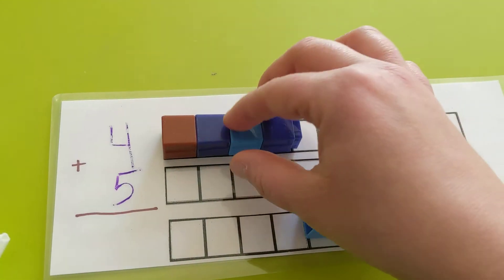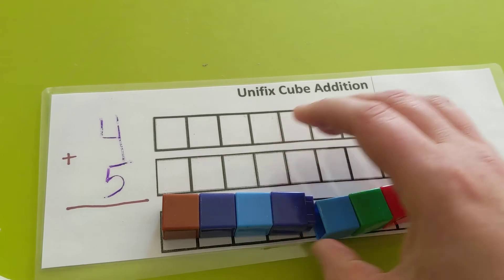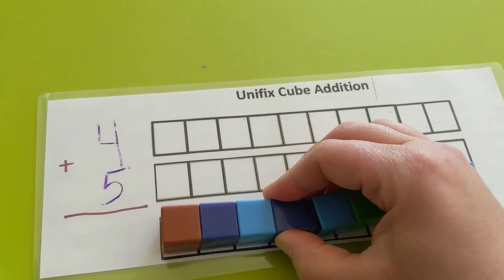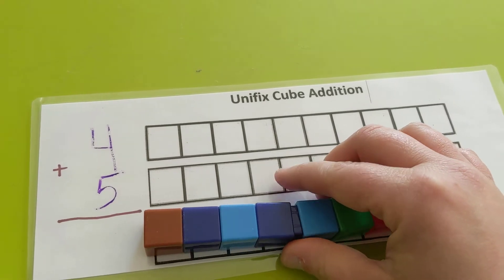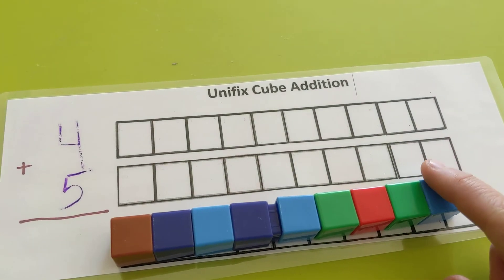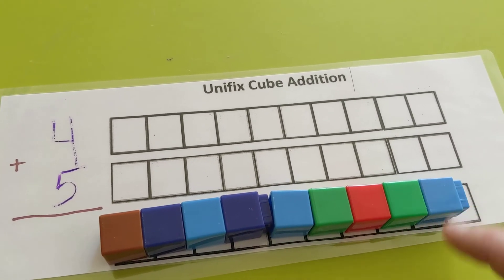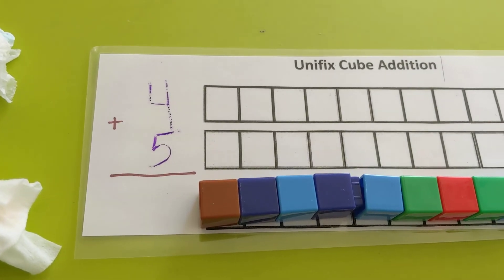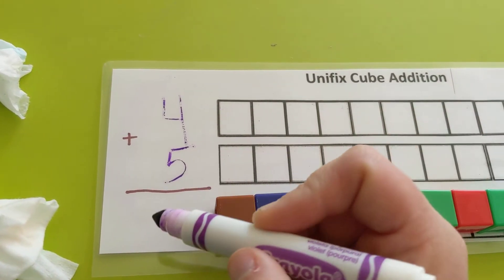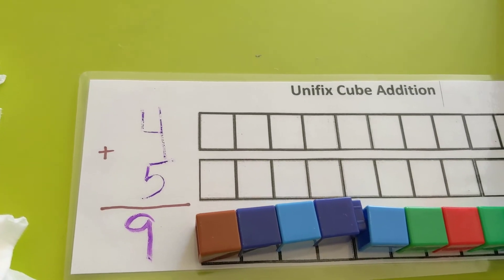We put them together down here. Equals. What? 1, 2, 3, 4, 5, 6, 7, 8, 9. 9 again, you guys. 6 plus 3 equals 9. And now 4 plus 5 also equals 9. There's lots of ways you can make 9.